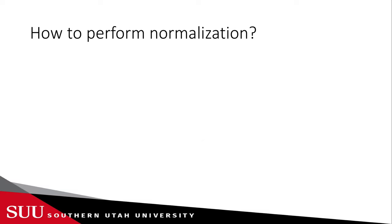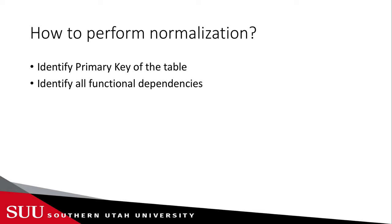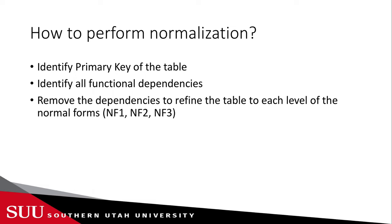Before we dive into a real-life example on how to perform normalization, let's quickly recap the steps. We need to identify the primary key of the table, identify all functional dependencies, and then remove those dependencies and multi-valued attributes to refine the table to each level of the normal forms: 1NF, 2NF, and 3NF, referring to first, second, and third normal form respectively.